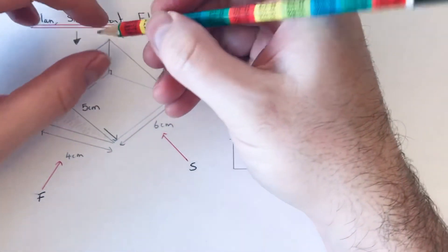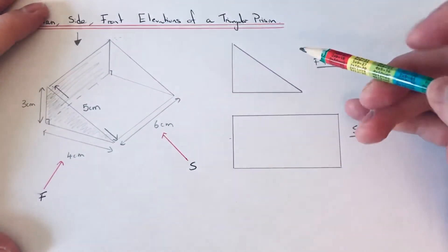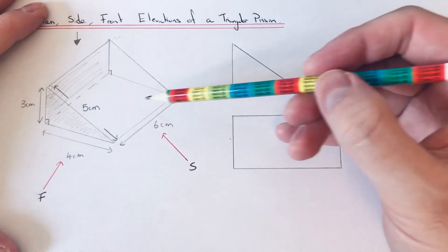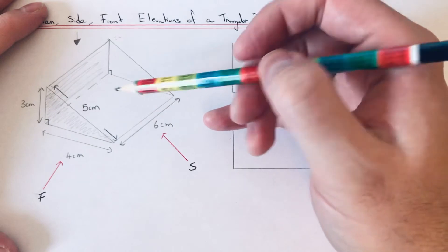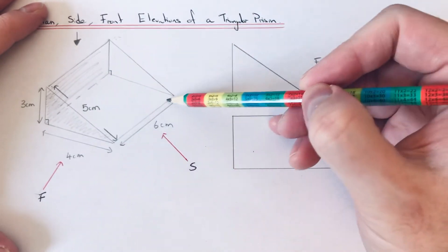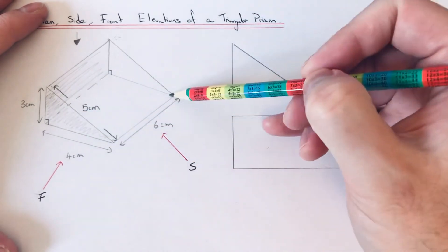Again, the trick on this one is to just look at the face at the bottom of the prism. So the face at the bottom of the prism is a four by six rectangle.